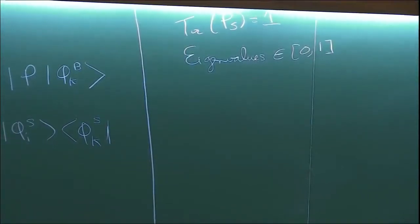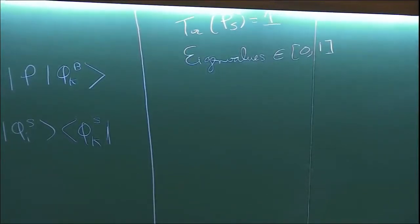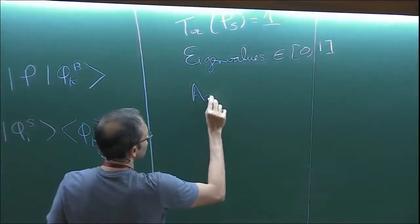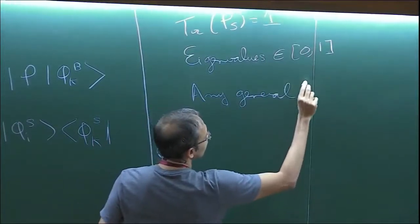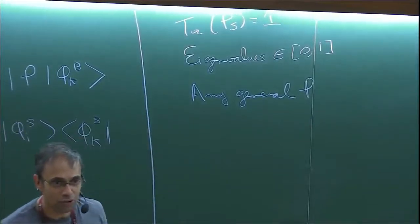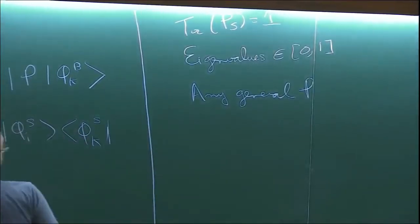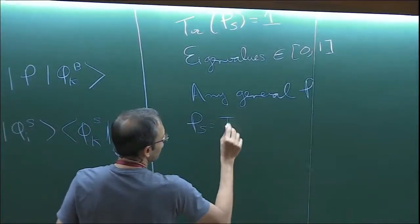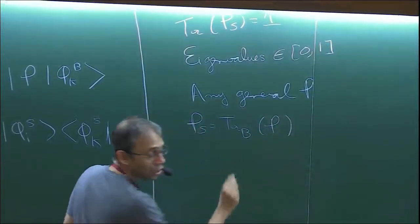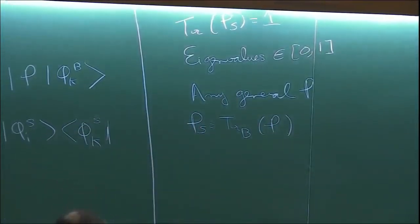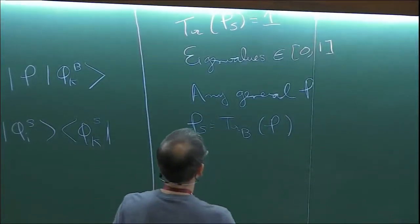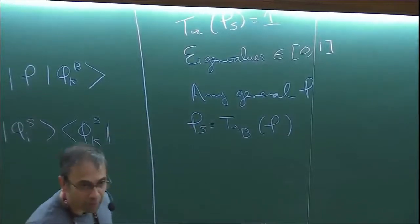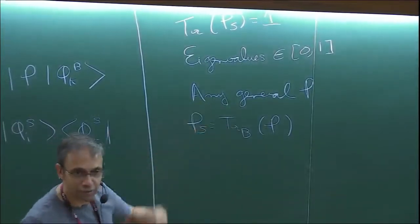It turns out that the density matrix we started with doesn't have to be of this pure-state form for you to define a reduced density matrix for the subsystem. I chose this form to get a simple expression, but in general you could have any general rho which doesn't have to correspond to a pure state, and from that you could obtain the reduced density matrix by employing exactly the same mathematical operation of tracing over the degrees of freedom of the bath.